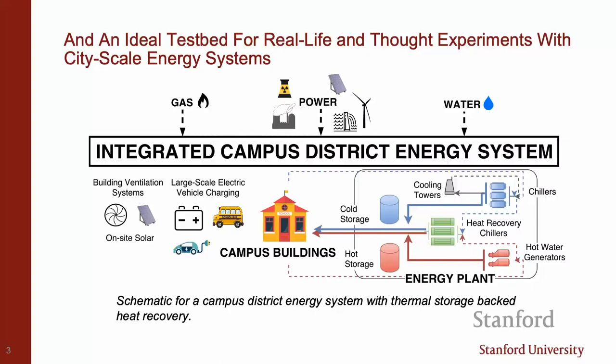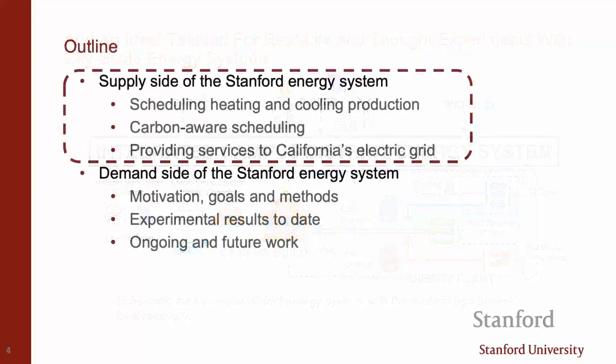Moving to the left of the diagram, there are other energy assets: solar on campus — about three megawatts of rooftop solar — electric vehicle charging, and building ventilation systems. These are big fans in the buildings that blow around air and consume quite a bit of electricity as well. I'll talk about two pieces of work that are separate but really one continuation.